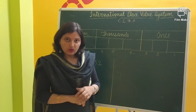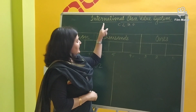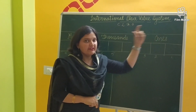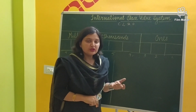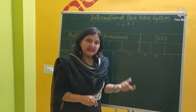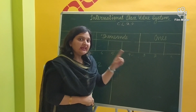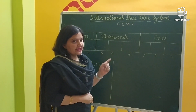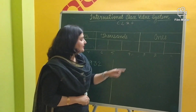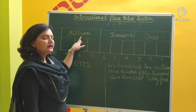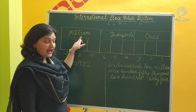But now in the international place value system, whenever we have to represent a bigger number, we use 3 different periods, and they are ones, thousand, and million.